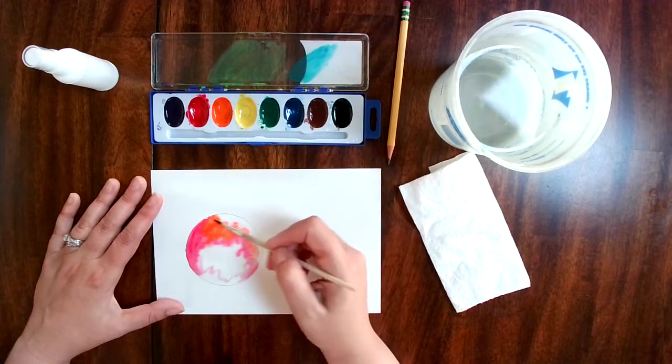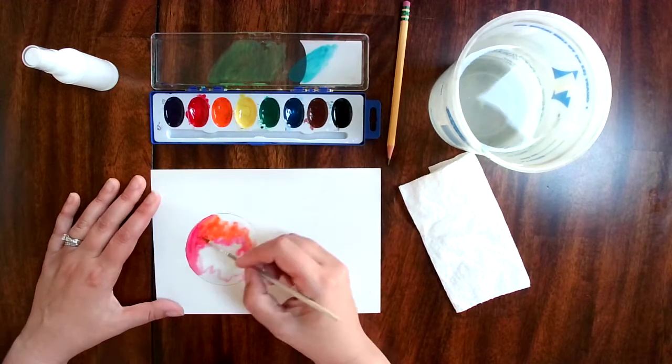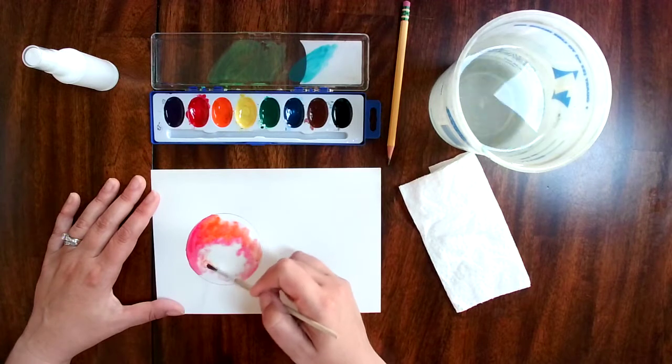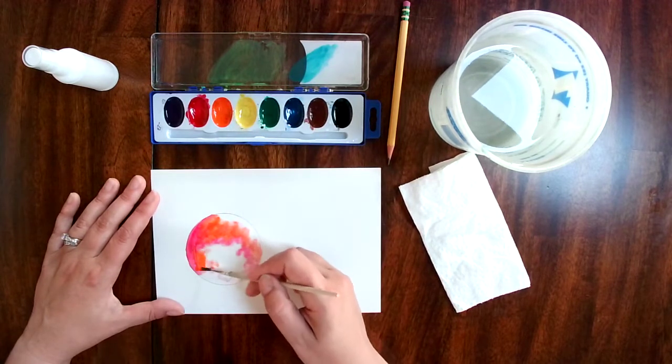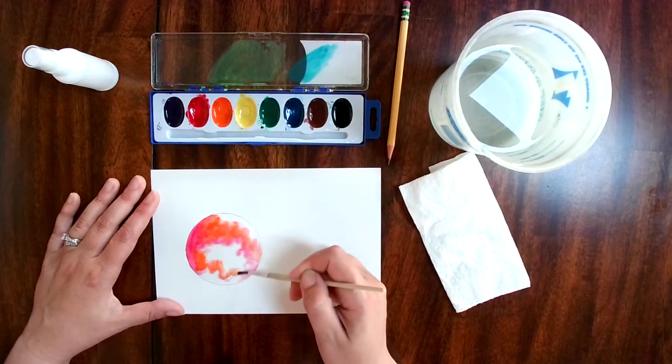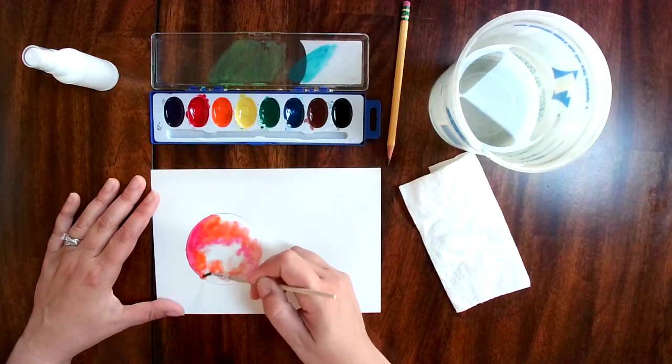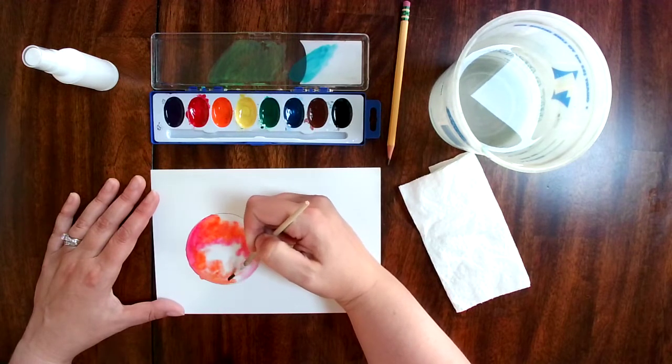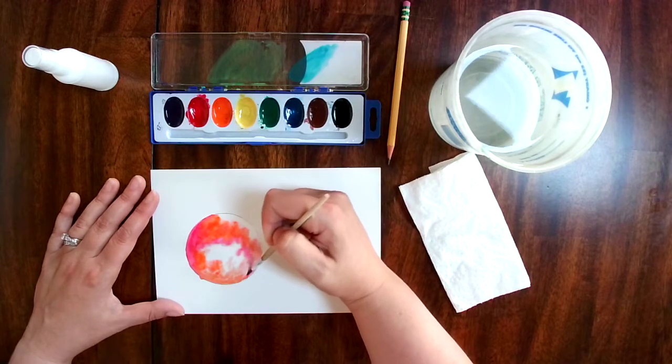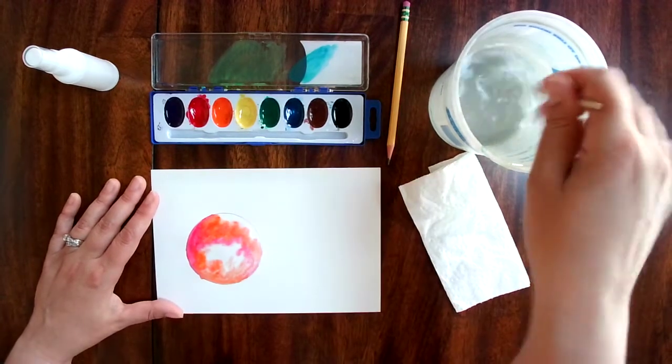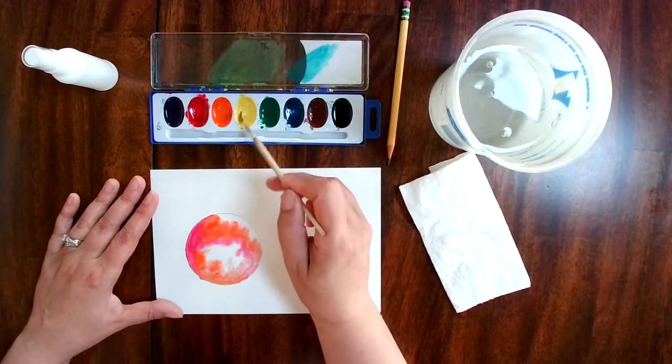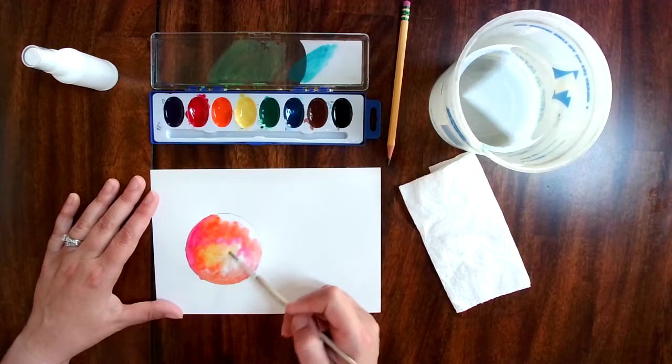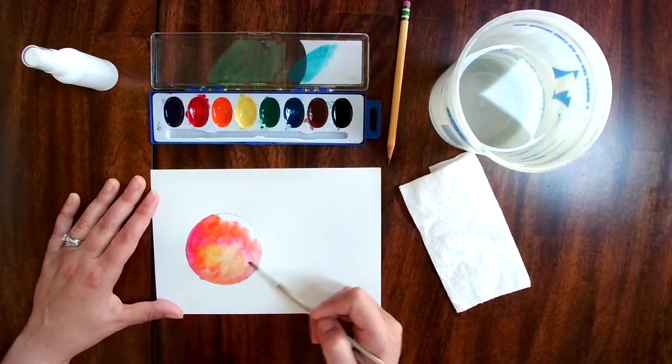My paints were already a little wet because I was using them for another project. If your paints are dry, you'll want to take your squirt bottle and make those wet. If you go up beside the lines a little bit, that's okay because we're gonna go back around the outside with dark and it'll probably cover it up. Now maybe you want to make your planet blue and green or purple - that's totally up to you.